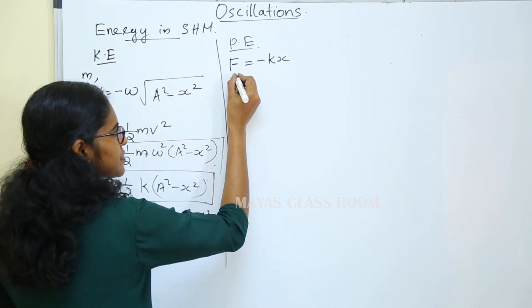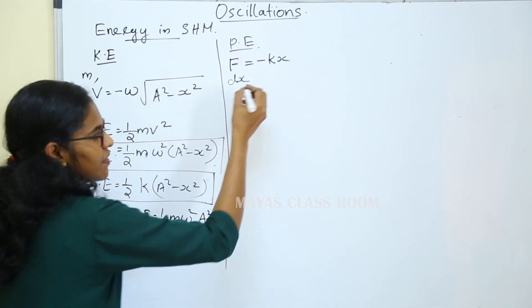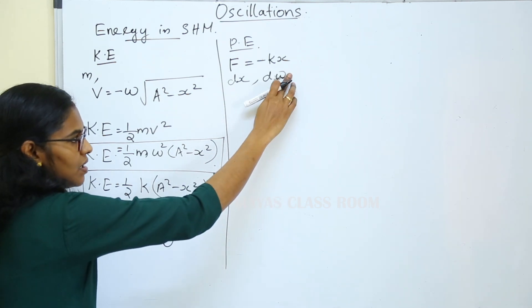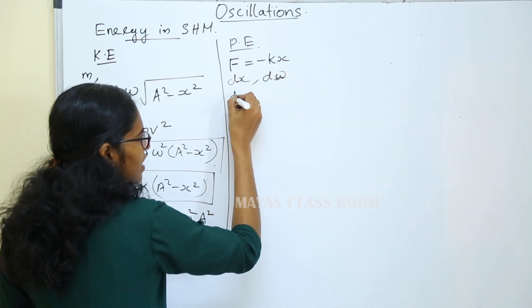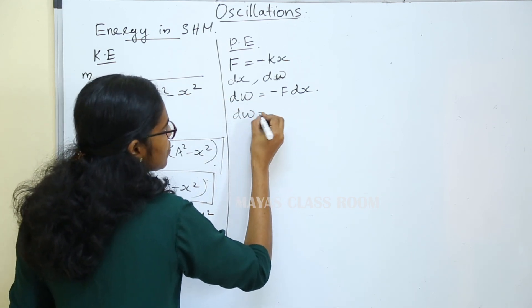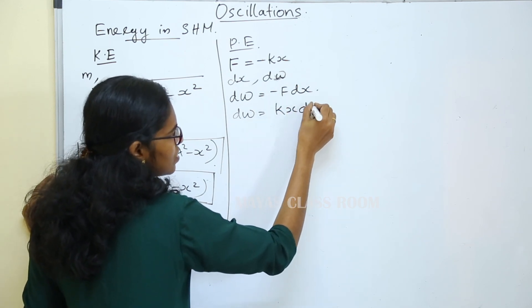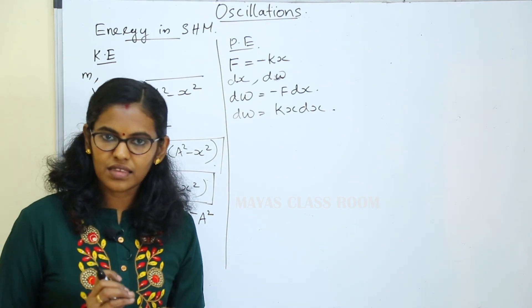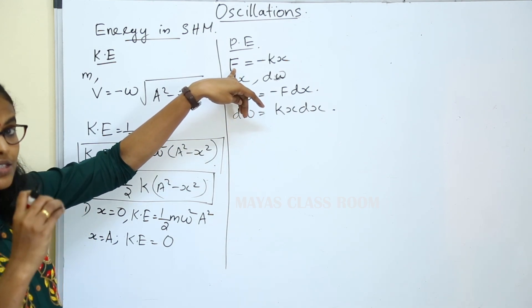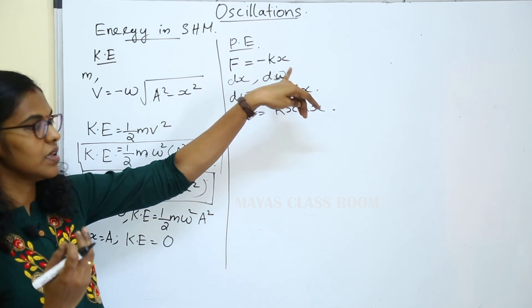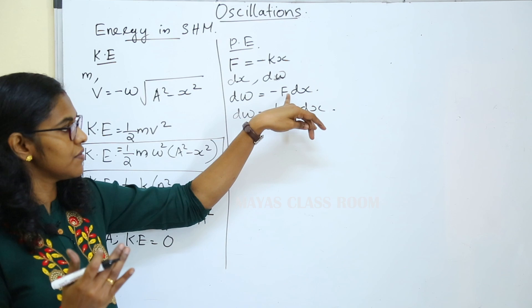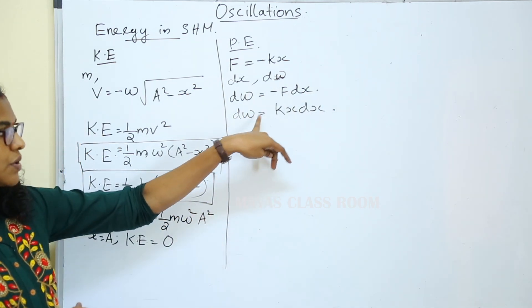Now we have dx, a small displacement. dW is the work done for a small displacement. The work done in displacing a particle from its equilibrium position: if we move the particle a distance x, we have the same restoring force. For a small displacement, dW is equal to minus F into dx. Substituting, dW is equal to k times x into dx.